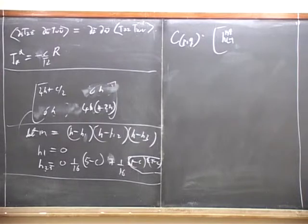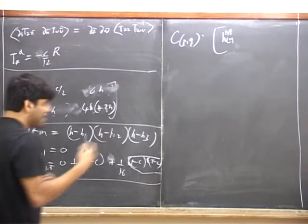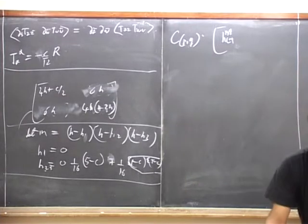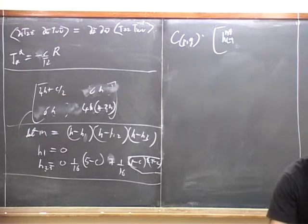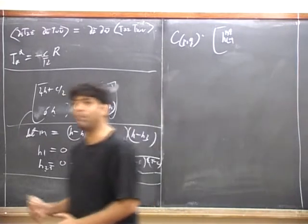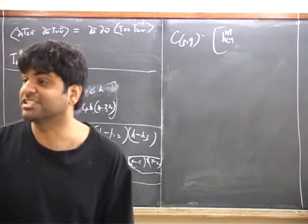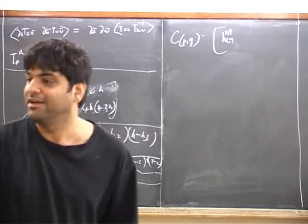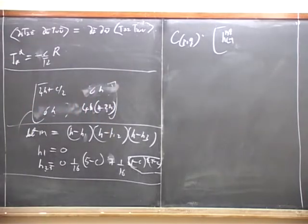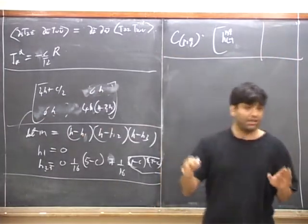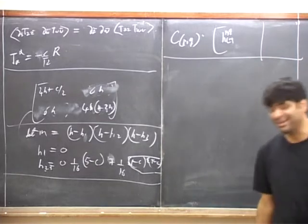Just unitarity in a conformal field theory with central charge less than 1 tells you a great deal about structure. It tells you that the central charge can't be anything — it has to be one of a discrete set of values. And once you know the central charge, the operator scaling dimensions can't be anything either; they take a finite number of values. Unitarity gives you important constraints on the physics of CFTs with C less than 1.